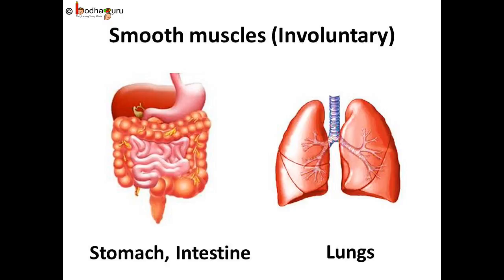Do you have to think about making your intestine and stomach digest the food, or do you have to remind your lungs to keep inhaling and exhaling air? No — the movement of these muscles is not controlled by us. They know their job and keep doing it. These are called involuntary muscles, present in internal organs like the stomach and intestine. They are not attached to any bone, they do not have stripes, and hence are called smooth muscles.